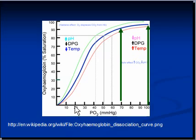At a partial pressure higher than 20 millimeters of mercury, the affinity of oxygen towards hemoglobin — in other words, the attraction of oxygen molecules towards hemoglobin — increases sharply.